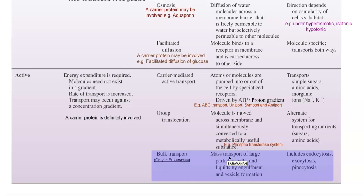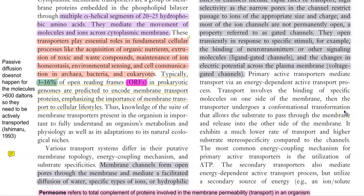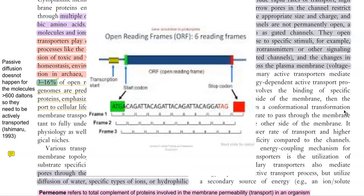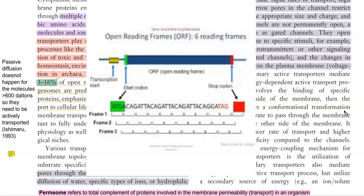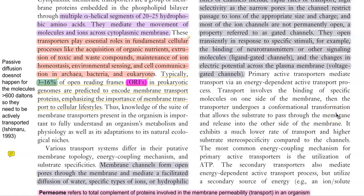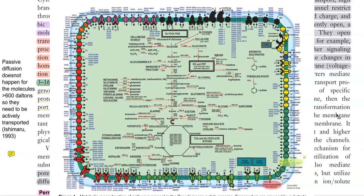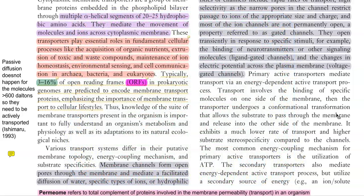Group translocation is generally referred to as an alternative system for transport of nutrients, especially sugars and amino acids. If we look at the genome of prokaryotic organisms — mainly bacteria and archaea — 3 to 16% of the open reading frames code only for transport proteins. An open reading frame contains a start codon followed by codons for amino acids and ends with a stop codon. This proportion demonstrates the importance of membrane transport systems in the cellular lifestyle of these organisms.